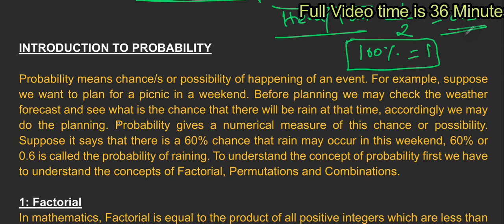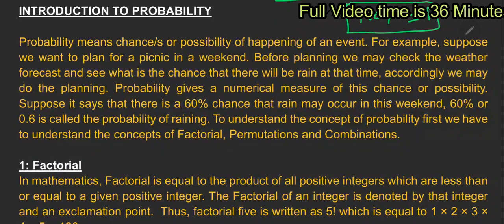We may check the weather forecast and see what is the chance that there will be rain, so we may do the planning. Probability gives a numerical measure of this chance or possibility. If we are going to a picnic, we will check the weather forecast. We are talking about the probability value as a percentage — the numerical value of probability.